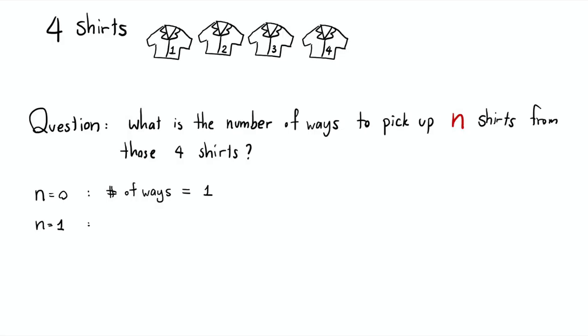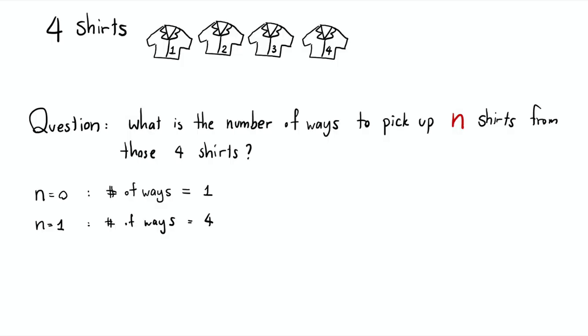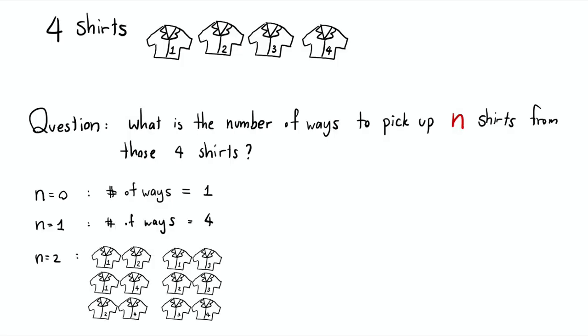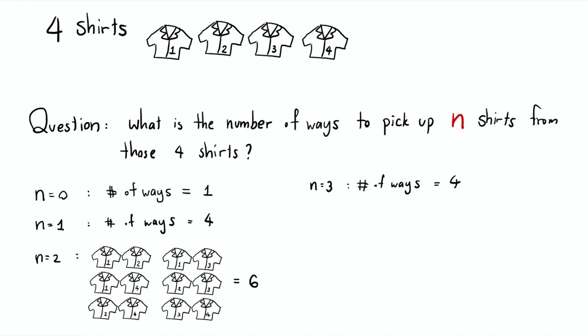If you want to pick one shirt, since you have 4 shirts, there are 4 ways — you can pick the first, second, third, or fourth. If you want to pick 2 shirts, it's a little more complicated, but there will be 6 ways to pick 2 shirts out of 4. For 3 shirts, you can think of it as leaving out 1 shirt — you have 4 shirts and you pick 3, so it's the same as leaving out 1. You can leave out 1, 2, 3, or 4, so there are 4 ways.